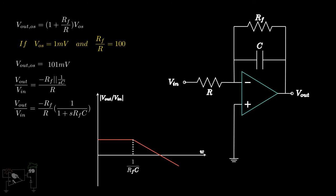Thus, RF by R must be sufficiently small so as to minimize the amplified offset. Whereas, RFC must be sufficiently large so as to negligibly impact the signal frequencies of interest. And that's how we fix our integrator.